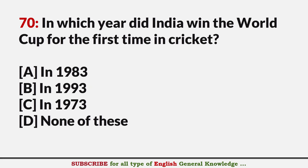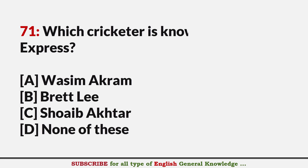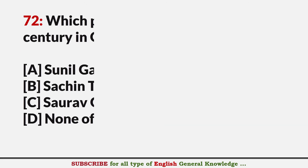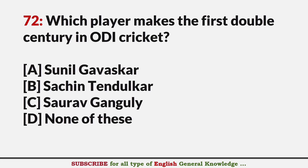In which year did India win the Cricket World Cup for the first time? Answer A: 1983. Which cricketer is known as Rawalpindi Express? Answer C: Shoaib Akhtar. Which player scored the first double century in ODI cricket? Answer B: Sachin Tendulkar.